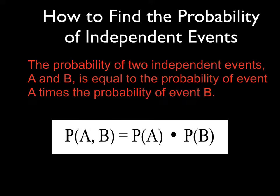So how to find the probability of independent events? The probability of two independent events A and B is equal to the probability of event A times the probability of event B. So A and B is equal to P(A) times P(B).